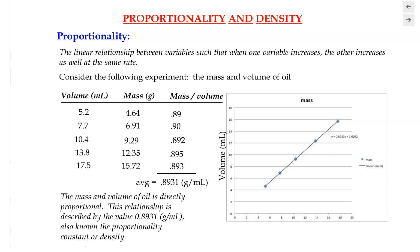In this video we'll be discussing density and the concept of proportionality. Proportionality basically refers to a linear relationship between variables, so that when one variable increases the other increases as well at the same rate. For an example, let's consider the following experiment between the mass and the volume of oil.